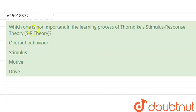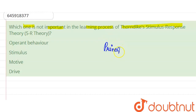Hello everyone. The question here is: which one is not important in the learning process of Thorndike's Stimulus-Response theory? That would be SR theory. If we talk about SR theory, which Thorndike had given, according to the principle, it was conditioning. That was the basic principle that he worked on — it was conditioning.